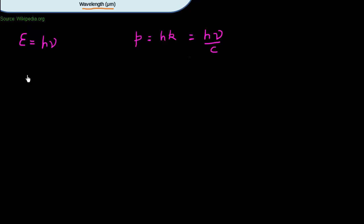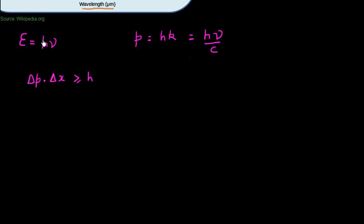I need only three equations. The third equation is the Heisenberg uncertainty principle: the uncertainty in momentum multiplied by the uncertainty in real space has to be greater than Planck's constant h. You can see that Planck's constant features in all three of the equations I need for deriving Planck's law.